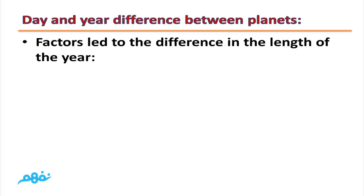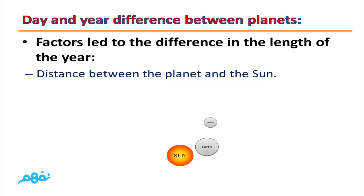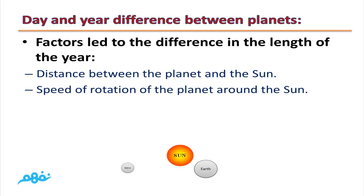Factors led to the difference in the length of the year. The first factor is the distance between the planet and the sun. As the distance from the sun increases, the length of its year increases. The second factor is speed of rotation of the planet around the sun. As the speed increases, the length of its year decreases.